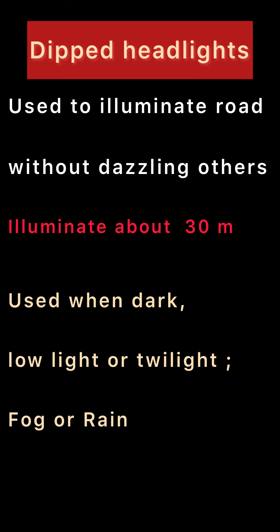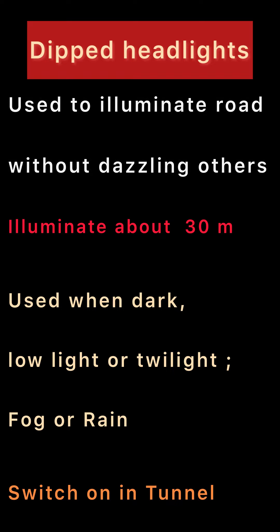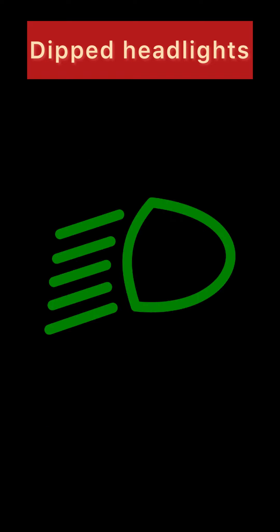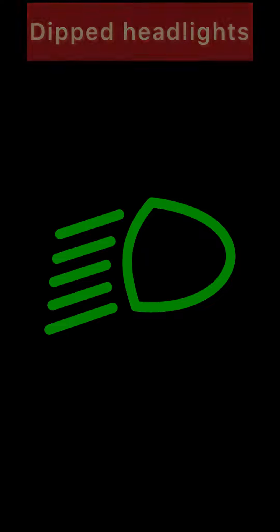Dipped headlights are used when visibility is reduced because of darkness, low light, or twilight — twilight means the sun is setting. They should also be used in fog or rain. You must mandatorily switch them on when you are in a tunnel. This is the indication shown inside your dashboard.